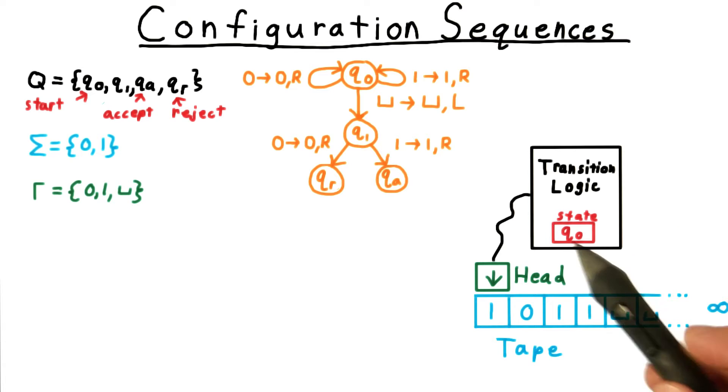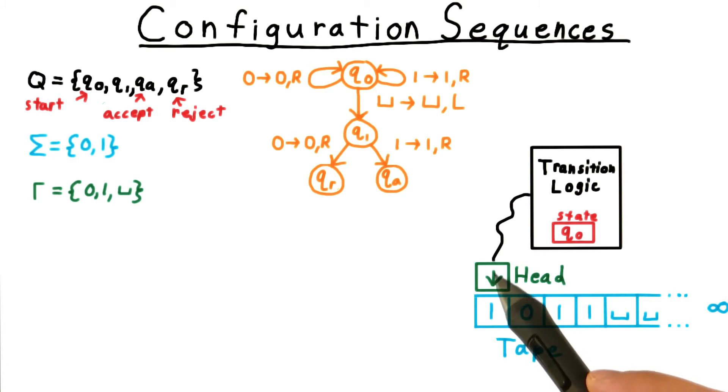Recall that a Turing machine always starts in the initial state and with its head over the first position on the tape. As it computes, its internal state, the tape contents, and the head position will change. But everything else will stay the same.